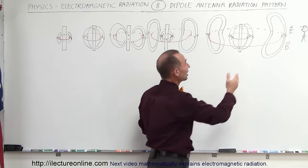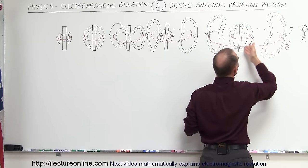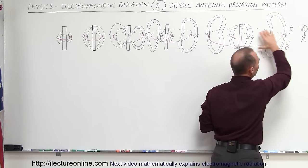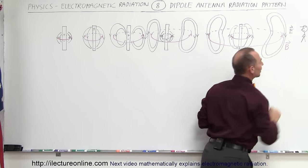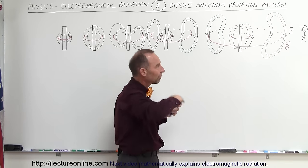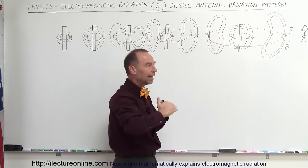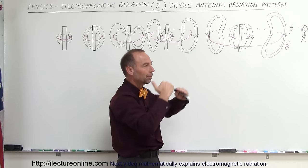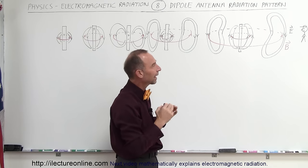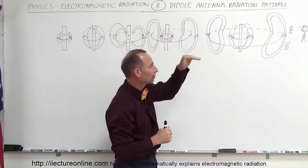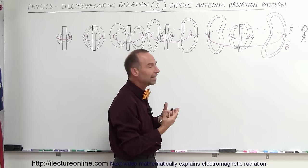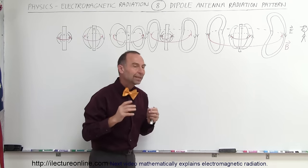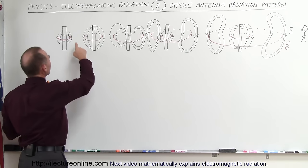The polarity keeps changing — the electric field is downward, then upward, then downward again. For an observer, the electric fields passing by show constantly changing polarity, and the magnitude oscillates up and down. The observer sees an oscillating electric field wave, which is electromagnetic radiation.